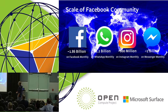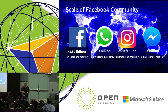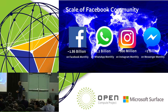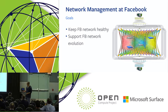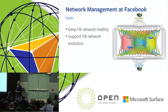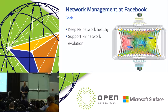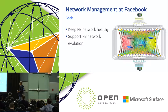There are two billion users using Facebook family products monthly across the world. In order to support such large user demand, Facebook needs to build and maintain its own network infrastructure, which includes the data center, the POP site, and the backbone. When we talk about network management at Facebook, we have two goals: first, we need to make sure our network is running healthy, and second, the network management system needs to be flexible enough to support our fast-evolving network architecture, driven by increasing user and application demand.